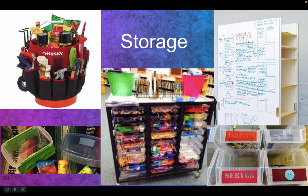Mobile craft carts are great. Label things with names and pictures — that's really important. A tool bucket — these could all be makerspace stuff; these don't have to be garden stuff. Storage is really, really important. I don't like a lot of permanent shelving and permanent cabinets — the room seems so fixed and nothing can be done with it.